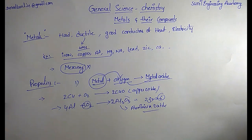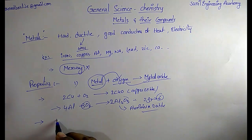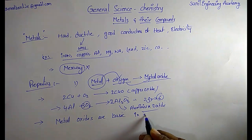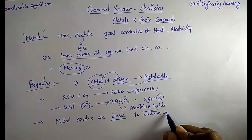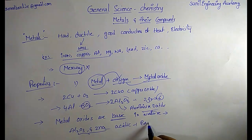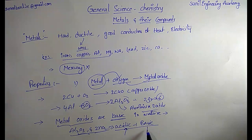As already discussed in acids and bases class, metal oxides are basic in nature. When they react with acids, they produce salt and water — that is why they are basic. However, there are exceptions: some metal oxides such as aluminum oxide (Al₂O₃) and zinc oxide (ZnO) show both acidic and basic nature. These are called amphoteric oxides.